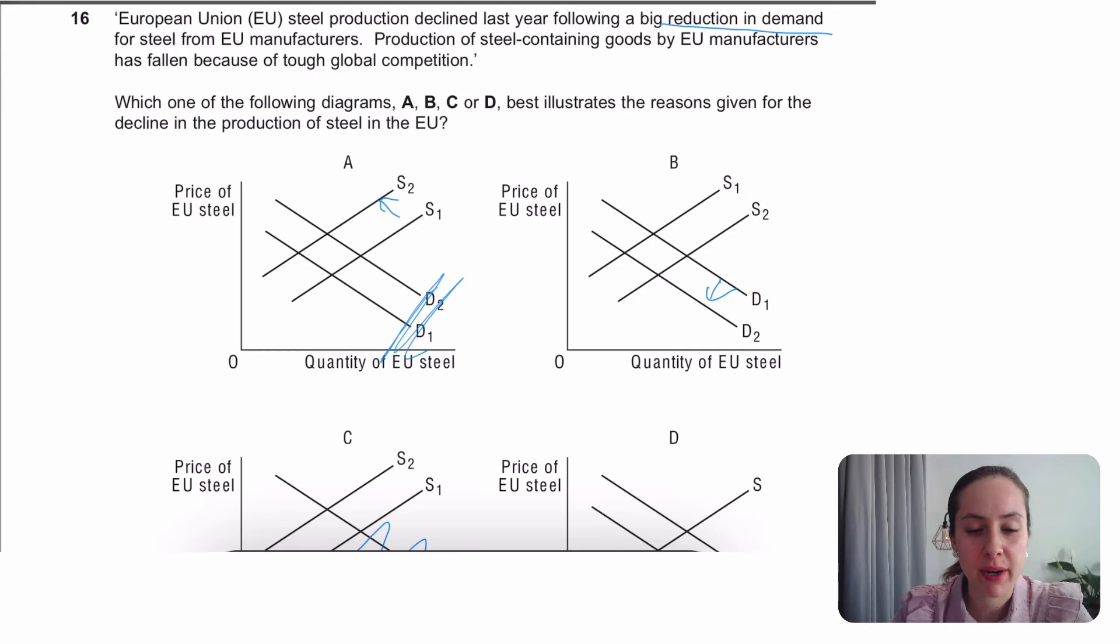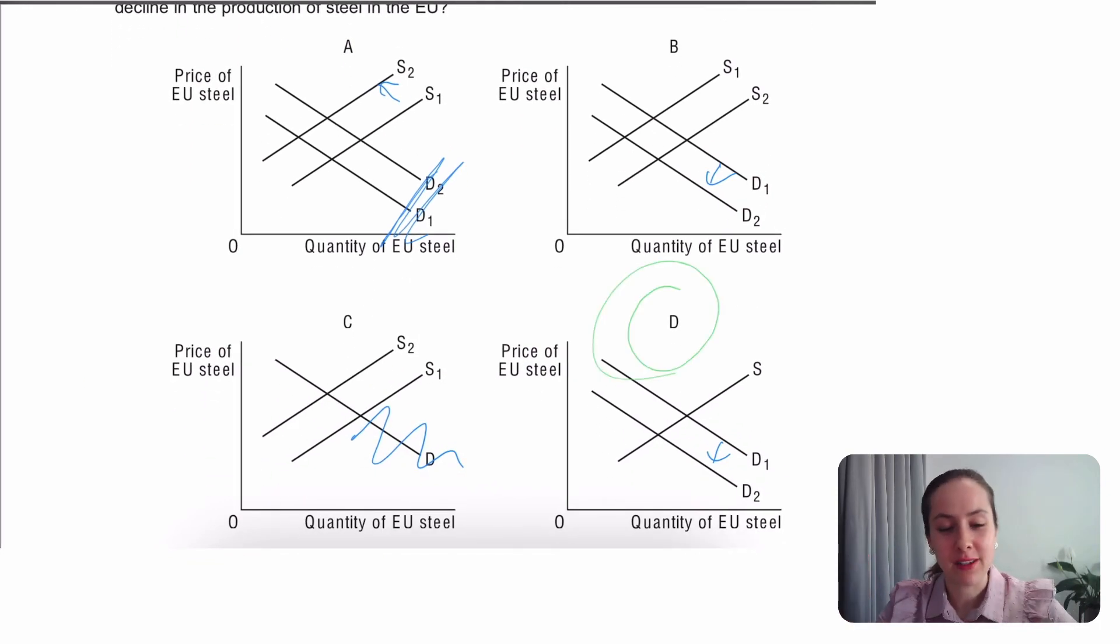Aha. So I really should have read it better. It says production of steel containing goods has fallen. So I'm going to highlight that one. So I guess steel is derived demand, right? So if something made of steel is being produced less, there'll be less demand for steel. So we've actually got two factors that are reducing demand. We've got the reduction that they told us in the beginning. And then we've got the reduction in demand because people are buying less steel stuff. So they need less raw material of steel. That one nearly caught me out.